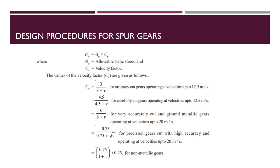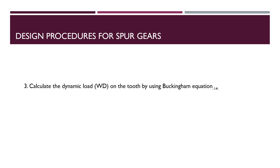The working stress σw = σ0 × Cv, where σ0 is the allowable static stress and Cv is the velocity factor. The velocity factor Cv is selected based on the operating velocity: for ordinary cut gears up to 12.5 m/s, Cv = 3/(3 + V); for carefully cut gears up to 12.5 m/s, Cv = 4.5/(4.5 + V); and for gears operating up to 20 m/s, Cv = 6/(6 + V).